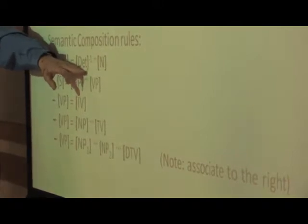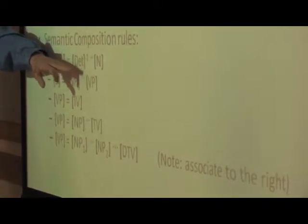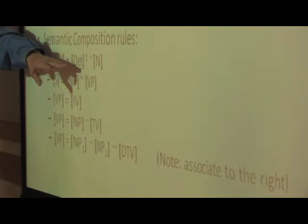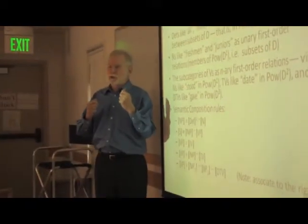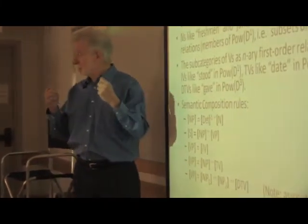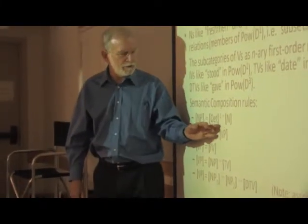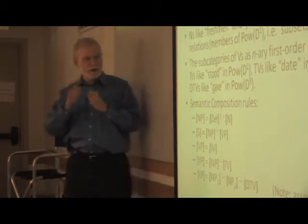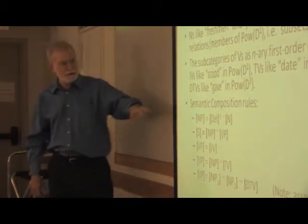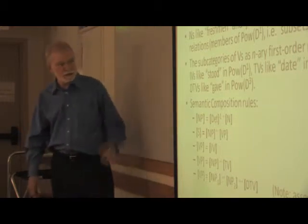Simply takes the binary relation between subsets that the determiner meant, inverts it because we usually think of its first argument as being the one that the noun fills, and then uses the noun's denotation as its second argument, fixes that, giving us the set of sets that are related to the noun denotation.